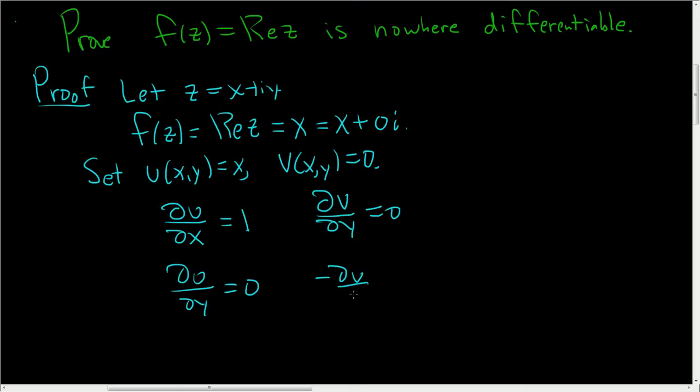And negative del v del x, that's also equal to 0. So these are the same, but that's not enough. These have to be the same, and they're not. So del u del x is not equal to del v del y.